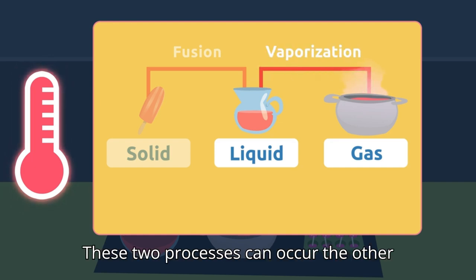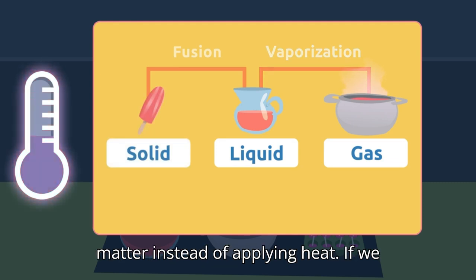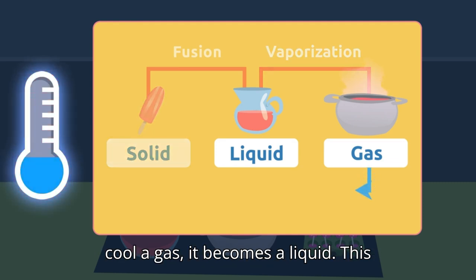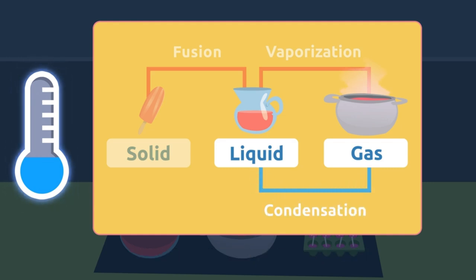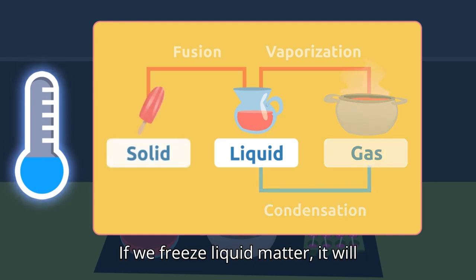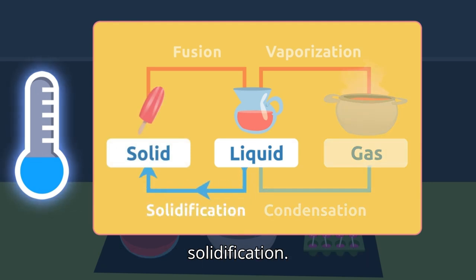These two processes can occur the other way around — this happens when we cool matter instead of applying heat. If we cool a gas, it becomes a liquid; this process is called condensation. If we freeze liquid matter, it will become a solid; this process is called solidification.